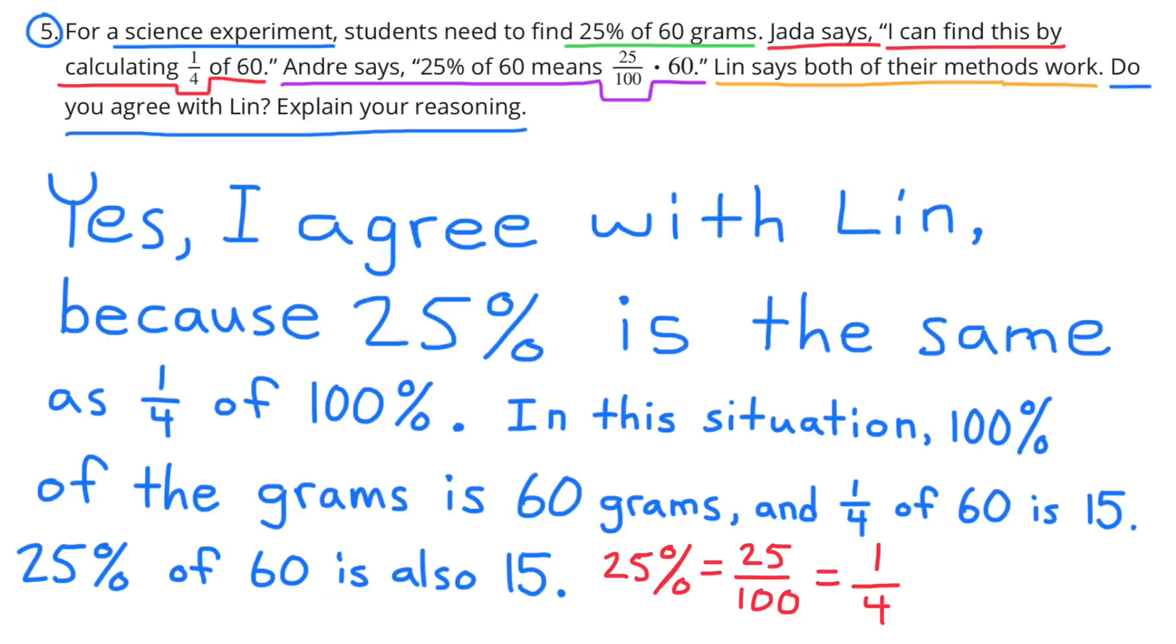Yes, I agree with Lin because 25% is the same as one-fourth of 100%. In this situation, 100% of the grams is 60 grams and one-fourth of 60 is 15. 25% of 60 is also 15. Another way to look at it is 25% equals 25 hundredths, or 25 over 100, which can be rewritten as one-fourth.